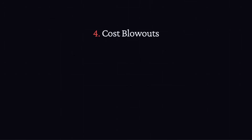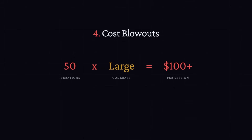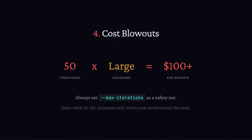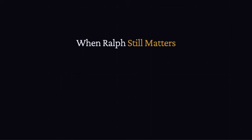Last but not least is cost. This is where people get burned. Fifty iterations on a large codebase can easily hit a hundred dollars or more per session when you're talking about Claude Opus. People have racked up hundreds of dollars in bills because they didn't set limits. Don't use this on the Claude API if you're on a pay-per-use plan — if you're on a Max plan you could give it a shot. Always set the max iteration parameter — this is not optional. Start with 10 or 20 iterations, see how it goes, and only increase when you understand what's happening.